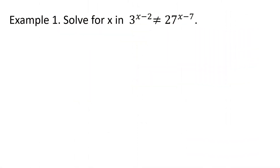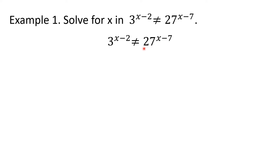Example 1. Solve for x in 3 raised to the x minus 2 power is not equal to 27 to the x minus 7 power. This is the given inequality. Just like in solving exponential equations, in solving an exponential inequality, since the unknown variable is in the exponent, the first goal is to rewrite it with the same base.